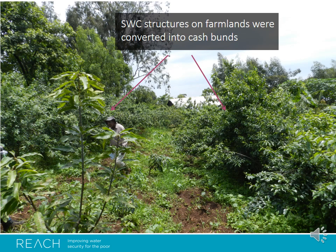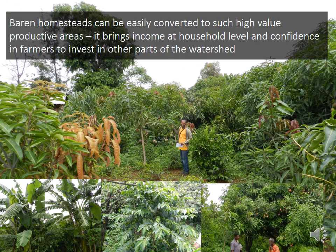One of the strategies we follow to convince the farmer is to make soil and water conservation physical structures and to convert them into cash benefits by planting important cash crops, fruits, and forage, as you can see. Another strategy we follow to build the confidence of the farmer is to convert barren homesteads into well-productive horticultural areas. This allows the farmer to get more income and build confidence to invest in watershed management outside the home.